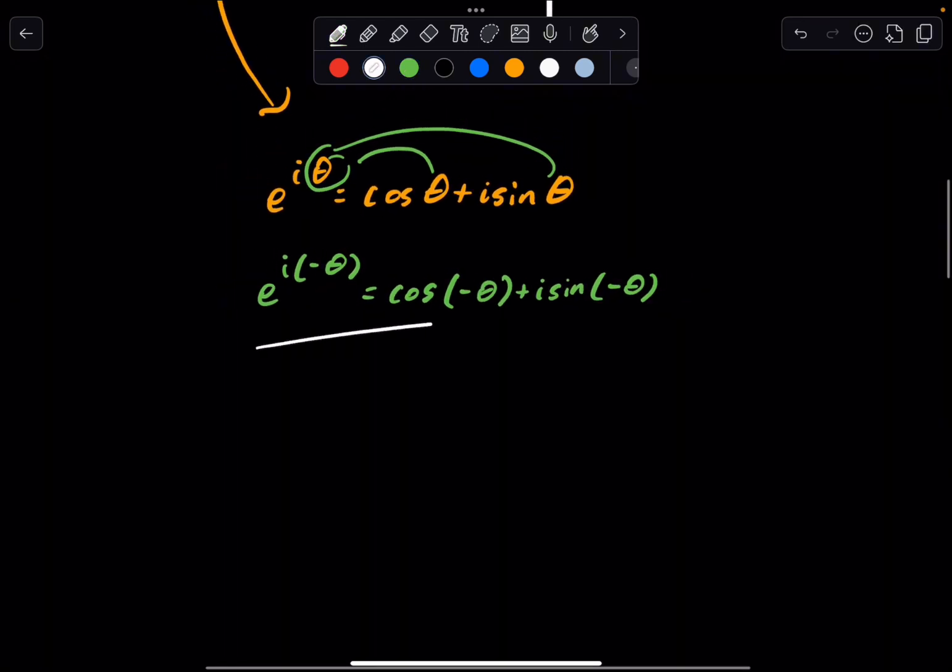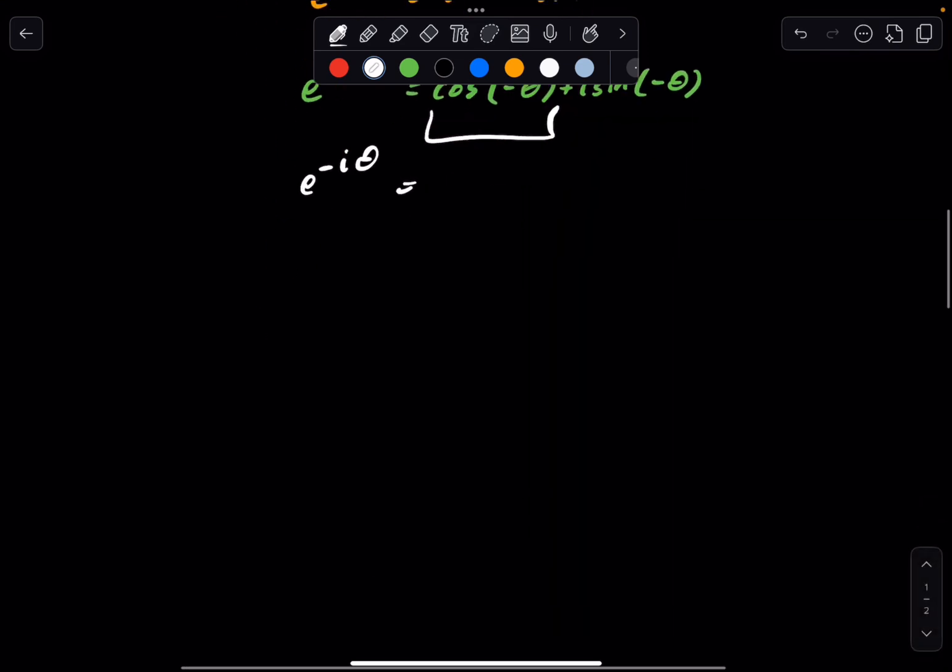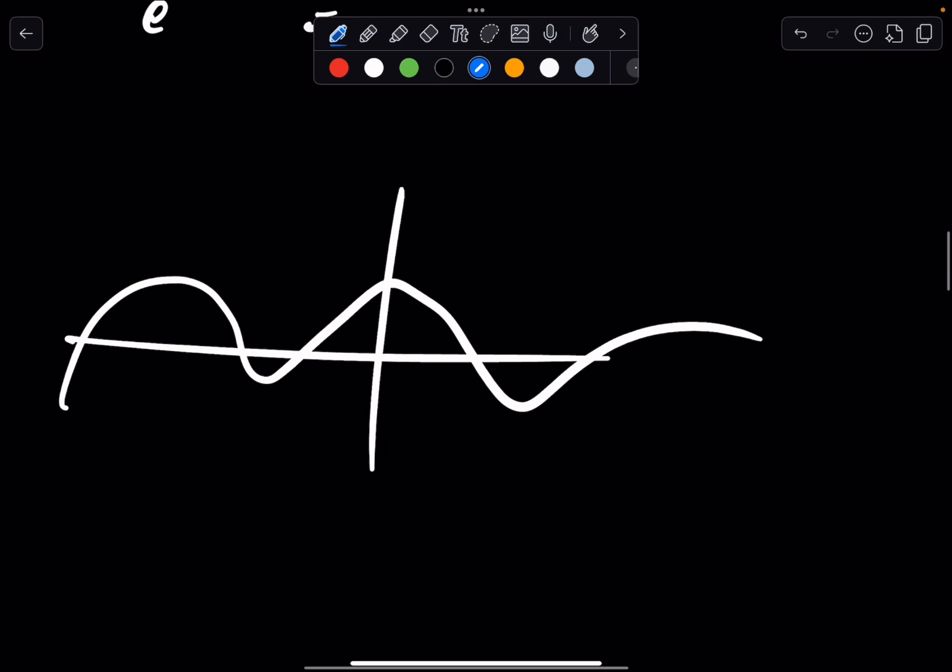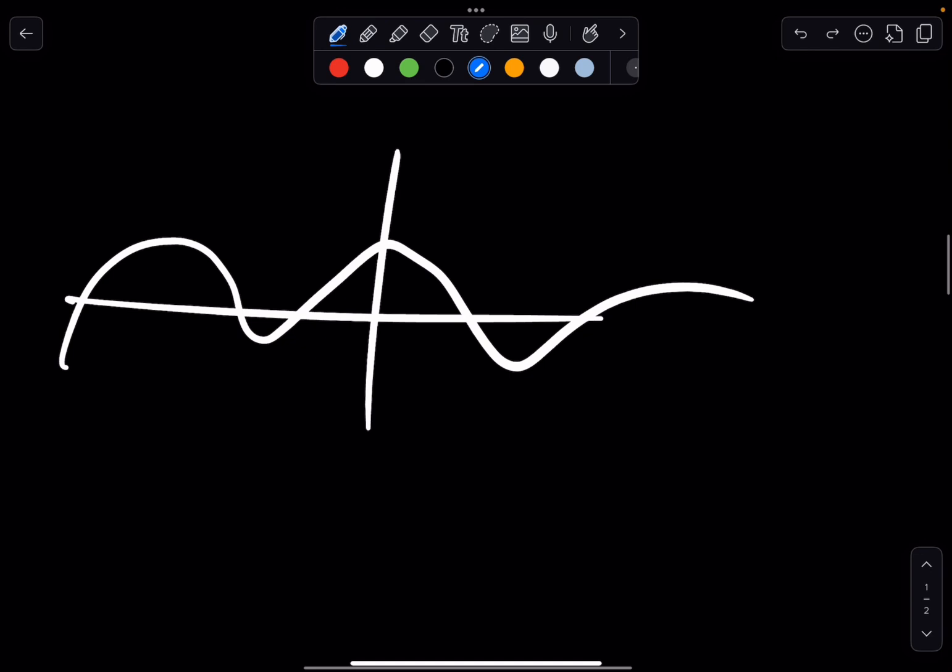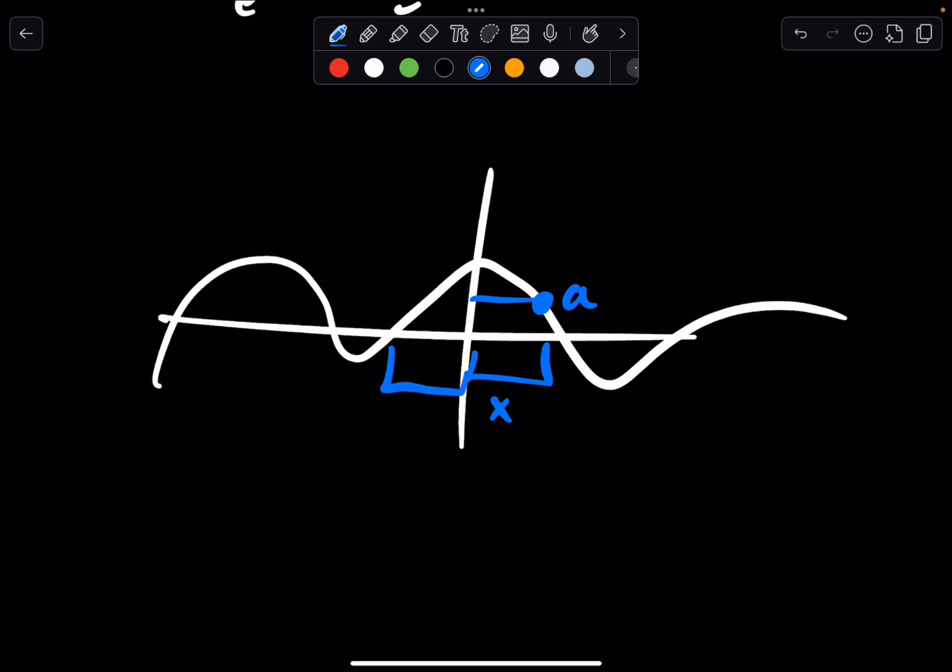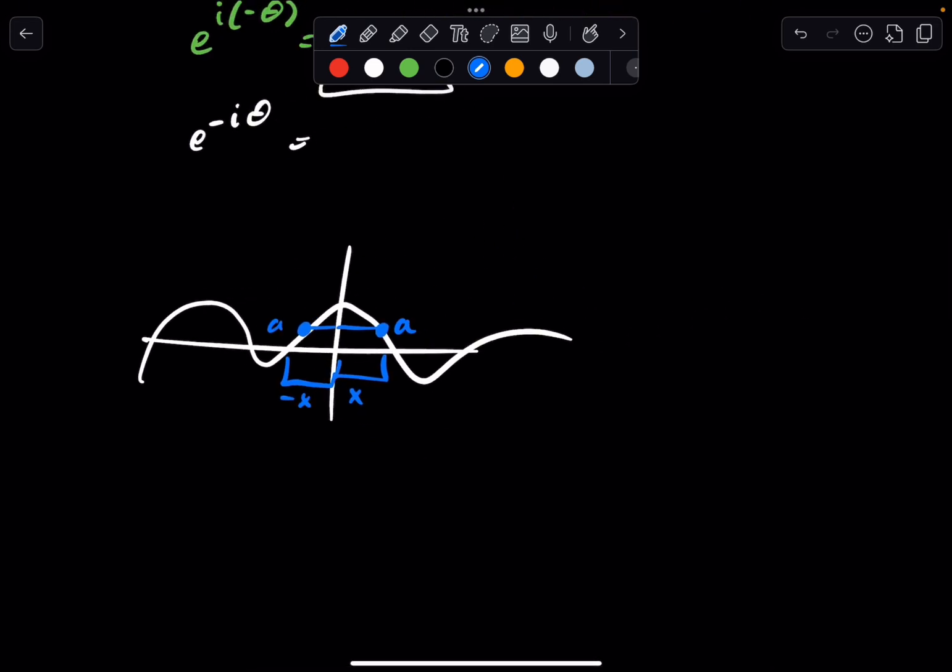So we're making good progress. Now, let's see if we can simplify this a little more. We have e^(-iθ) is equal to, what is cosine of negative θ? Well, if you look at the cosine graph, if I have a point right here, let's say this distance is going to be called x, and the value of cosine right here is A. It's the certain height A because that's the function value. Now, when I go negative x in the opposite direction, it should be like right there. This value would be A as well. It's the same value.